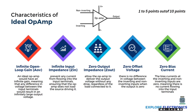The third characteristic is zero output impedance. At the output side the resistance will be zero, so the maximum current coming out from the op-amp will be given to the load. That is what zero output impedance means.